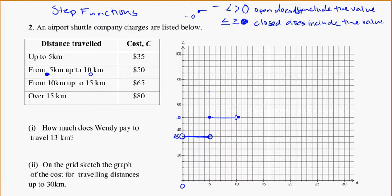And then same process again from 10 kilometers. So closed at 10 kilometers because it includes 10 kilometers. Up to but not including the 15 kilometers. We're going to charge $65. So I have a closed circle at 10 kilometers. Up to 15, which is here. And again at 15, we're going to have an open circle. Because it's not including it.